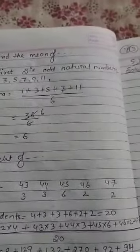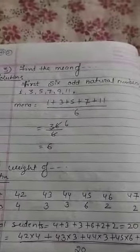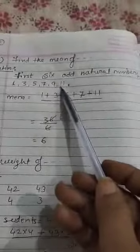Third question. Find the mean of first 6 odd natural numbers. Six odd natural numbers, what is going to happen? 1, 3, 5, 7, 9, 11.